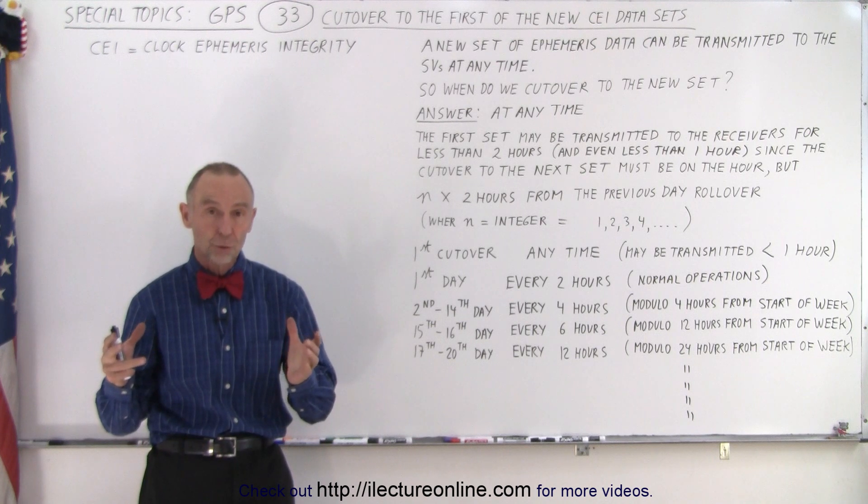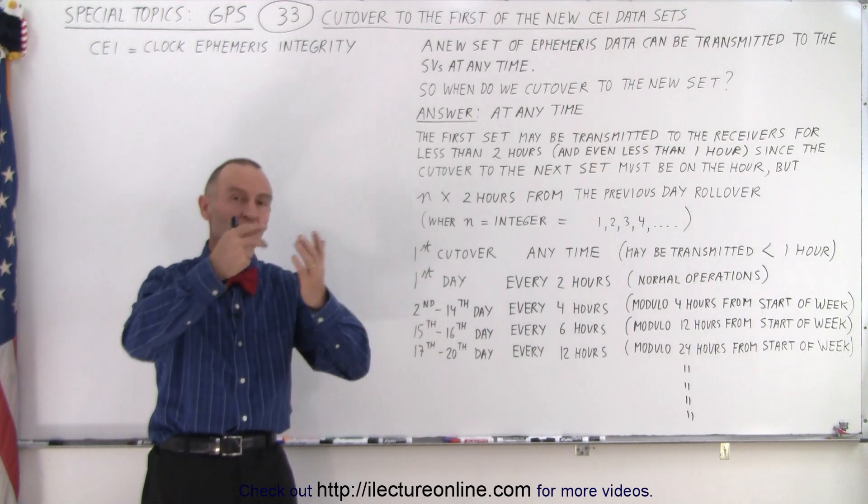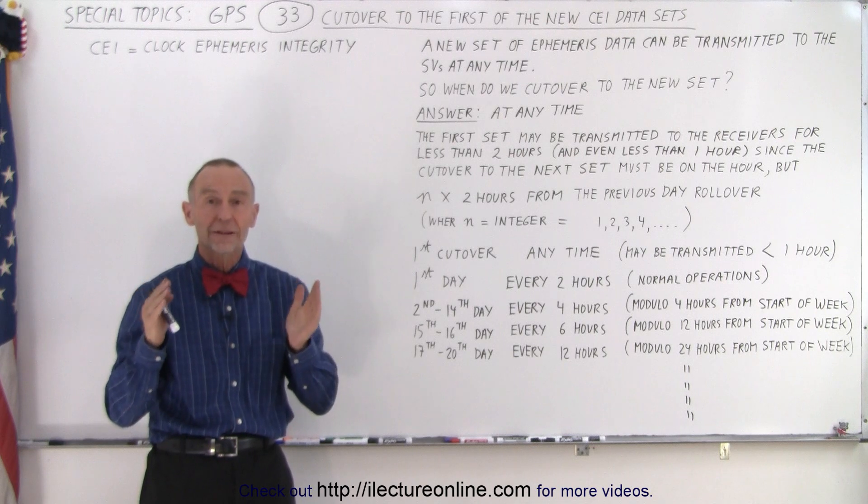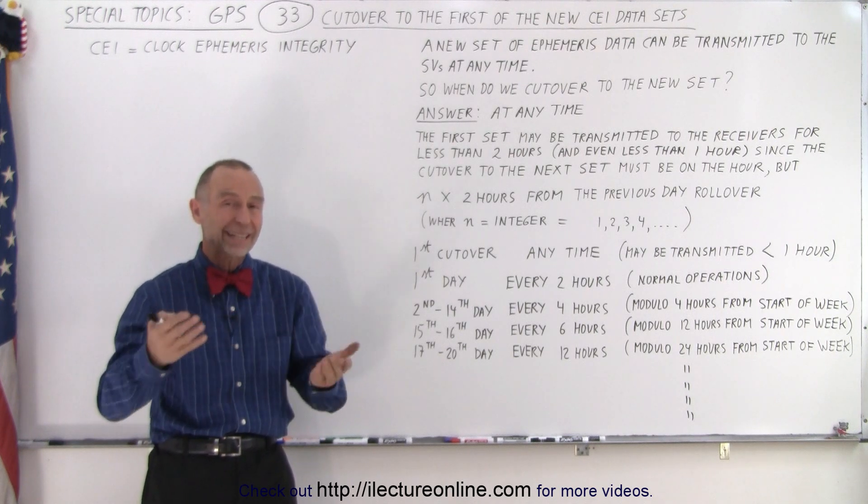And they put that data into what we call data sets and send those transmitters up to the SVs, and that will be the ephemeris data of the SVs over the next 64 days.